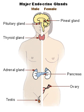In humans, the major endocrine glands are the thyroid gland and the adrenal glands. In vertebrates, the hypothalamus is the neural control center for all endocrine systems. The study of the endocrine system and its disorders is known as endocrinology.